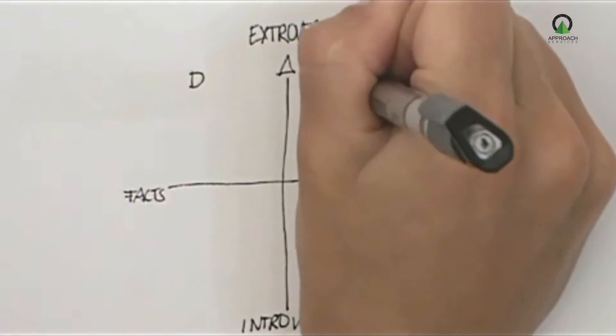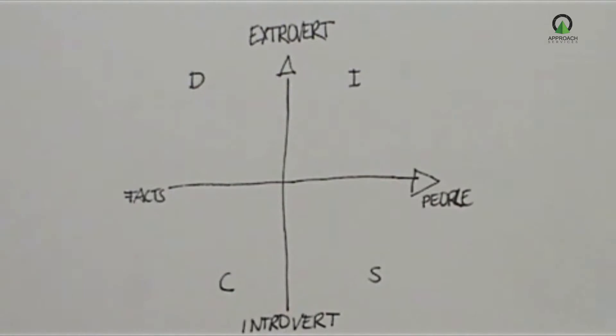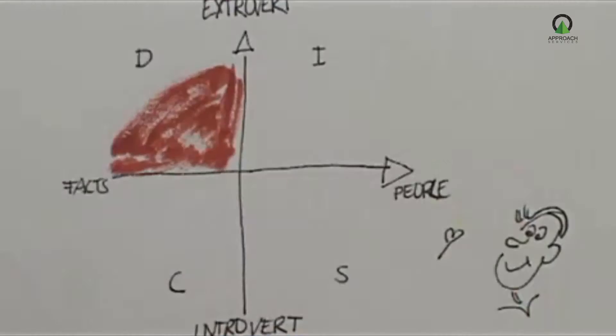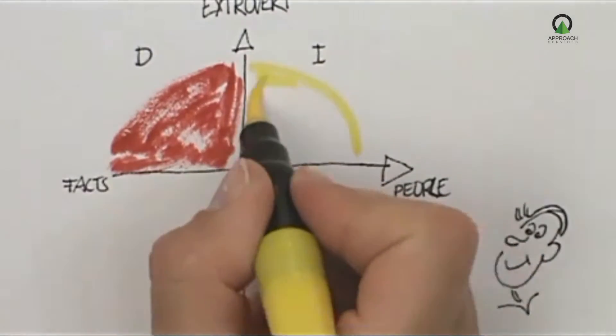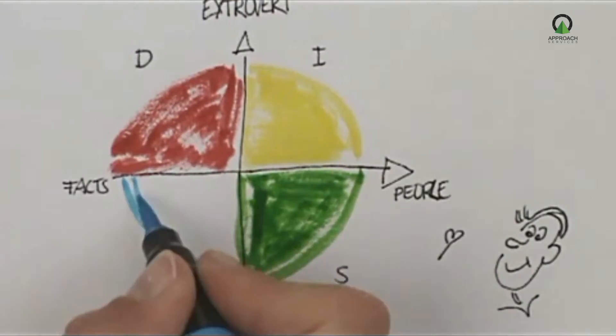The DISC model calls the four styles dominance, influence, steadiness, and conscientiousness. Or simply red, yellow, green, and blue.